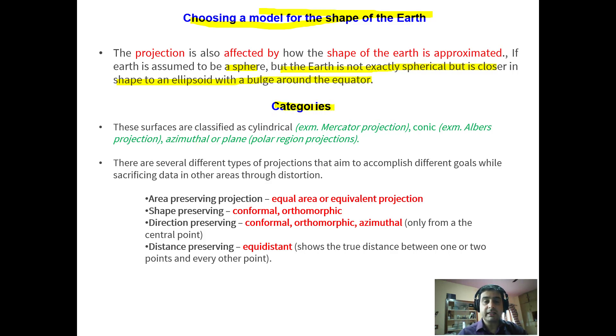Now what are the different categories? The surfaces are classified as cylindrical, which are like for example mercator projection, and conic projection, and azimuthal or plane projection, which applies to mostly to polar region projections.